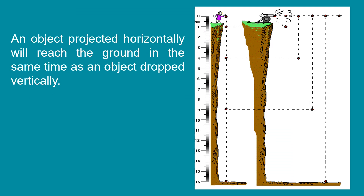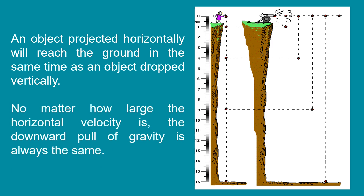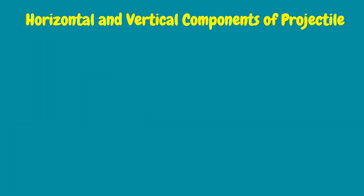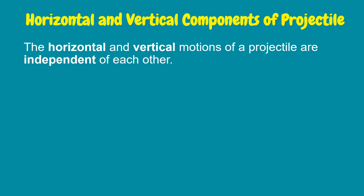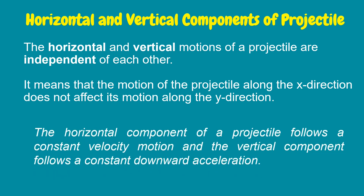An object projected horizontally will reach the ground in the same time as an object dropped vertically. No matter how large the horizontal velocity is, the downward pull of gravity is always the same. The horizontal and vertical motions of a projectile are independent of each other, meaning the motion along the x-direction does not affect its motion along the y-direction. The horizontal component follows constant velocity motion, and the vertical component follows constant downward acceleration.